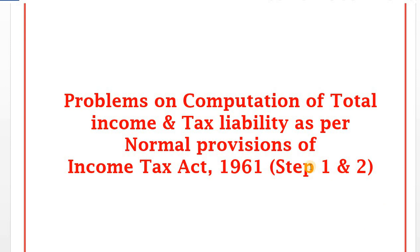There are 6 steps to follow in finding the tax liability of a company. Step 1: calculate total income as per the normal provisions. Step 2: tax liability on total income as per normal provisions. Step 3: computation of book profit under section 115JB. Step 4: computation of tax liability on book profit, that is Minimum Alternative Tax. Step 5: finding the tax liability — whichever is higher of normal tax liability or book profit tax liability. Step 6: tax credit.